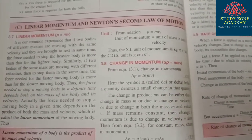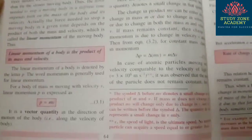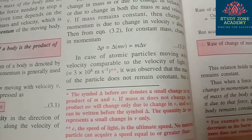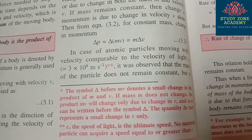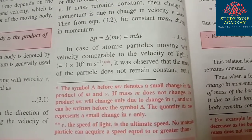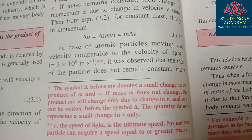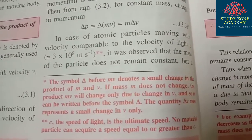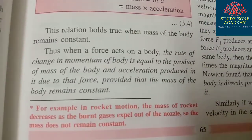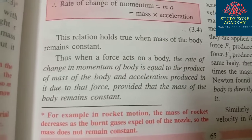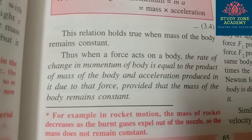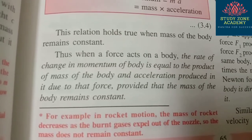From linear momentum and Newton's second law of motion: the symbol delta before 'mv' denotes a small change in the product of m and v — you might expect this question. Also: the speed of light c is the ultimate speed — a material particle cannot acquire speed equal to or greater than c. And in rocket motion, the mass of the rocket decreases as burnt gases expel from the nozzle, so mass does not remain constant.